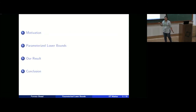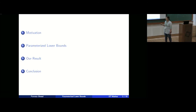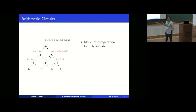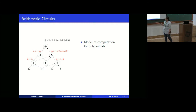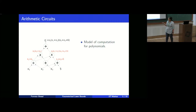The outline of my talk is: first I will motivate the problem, then speak about parameterized lower bounds, and then I will present our results. As a quick recap, arithmetic circuits are directed acyclic graphs with inputs — formal variables and constants from the field — where the inner gates are sum and product gates, and the output node computes a polynomial.